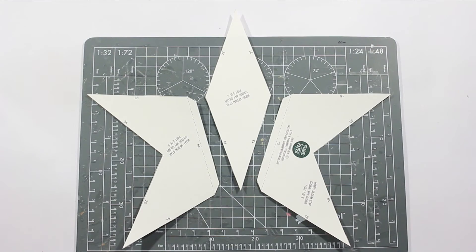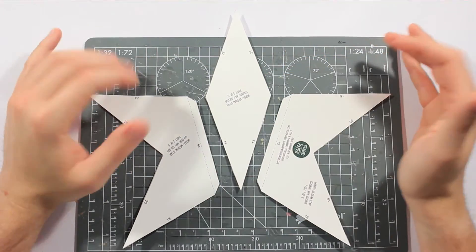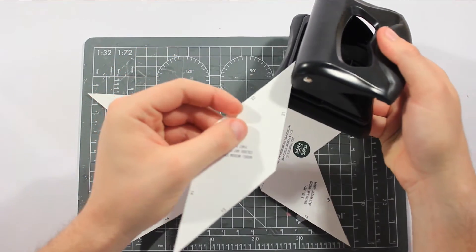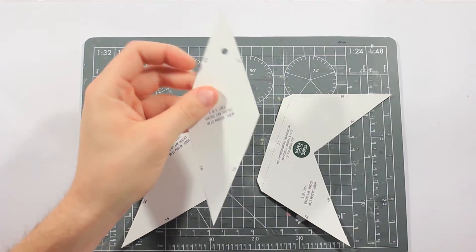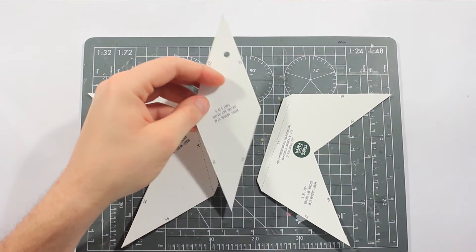This is the back of the second star, it's slightly bigger, but we can do the same thing. Just do one of them, so we can hang it up later, and now glue it together.